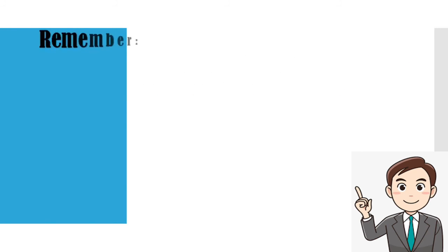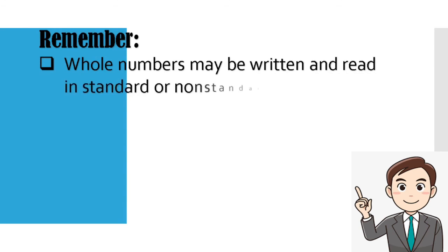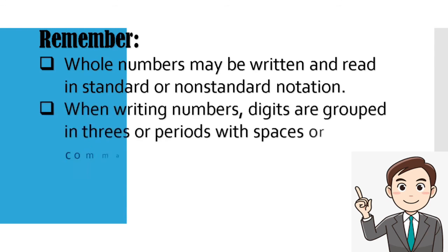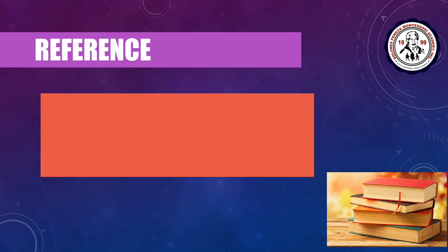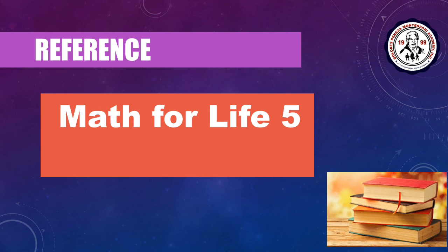Remember, all numbers may be written and read in standard or non-standard notation. When writing numbers, digits are grouped in threes or periods with spaces or commas between periods. Zero is used as a placeholder in a number. That's all for today. For your reference, you can open your Math for Life grade 5 book on pages 12 to 18. Good day and thank you, class.